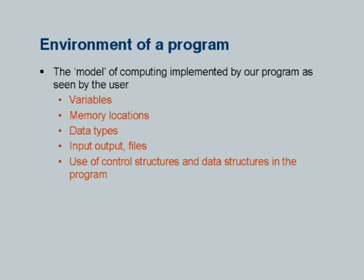You will adapt yourself to giving commands, understanding directories and subdirectories. Whatever is important will be indicated, and people will learn more by practice. Our obvious objective at this juncture is to ensure students are able to compile and execute a program when we start teaching programming. Finally, we come to the environment of a program — the model of computing implemented by our program as seen by the user or programmer. This includes the notion of variables, memory locations, data types, input-output, files, control structures, and data structures — essentially the subject matter of this computer programming course.